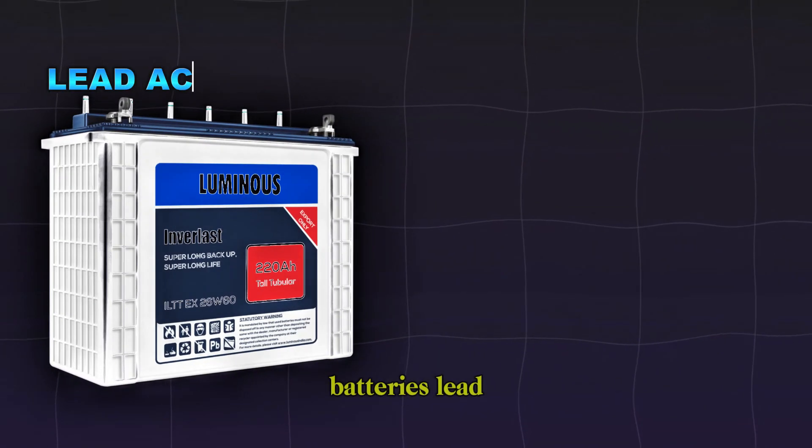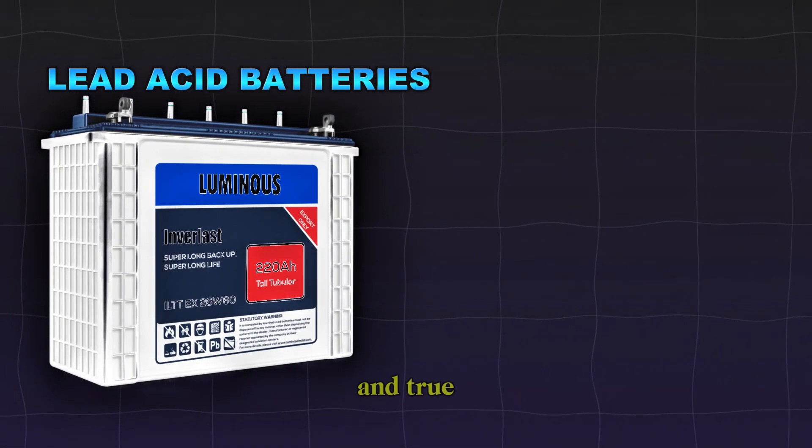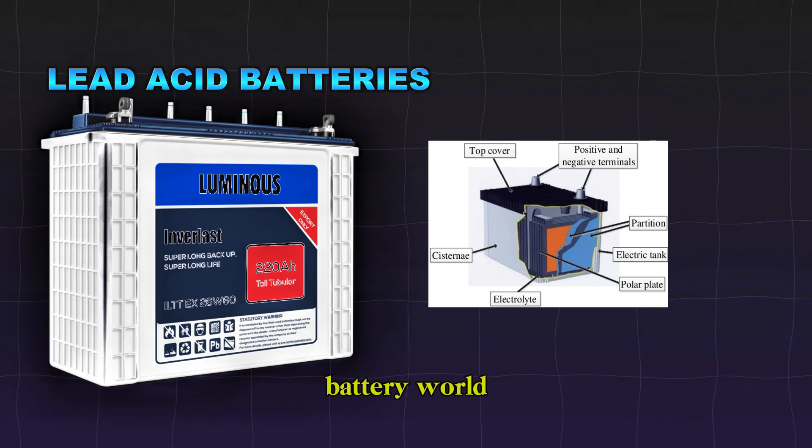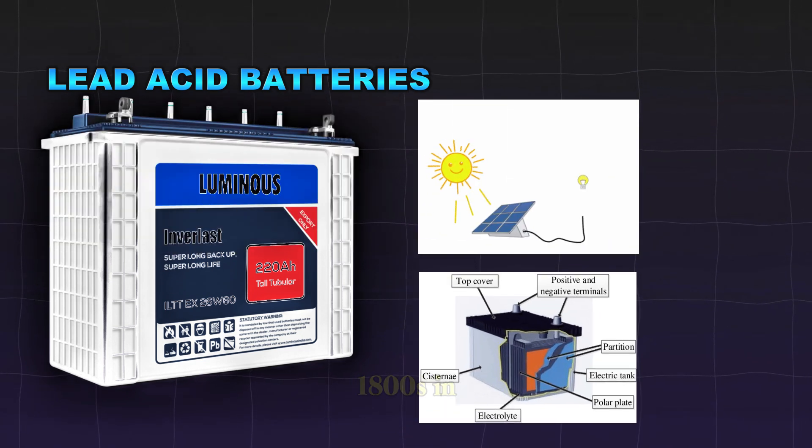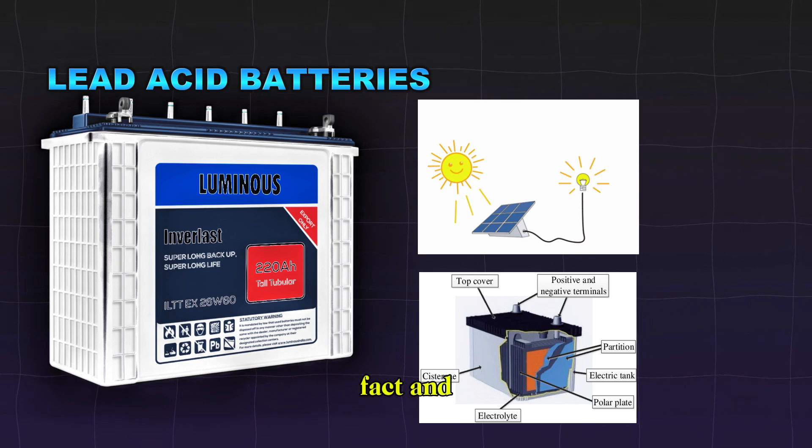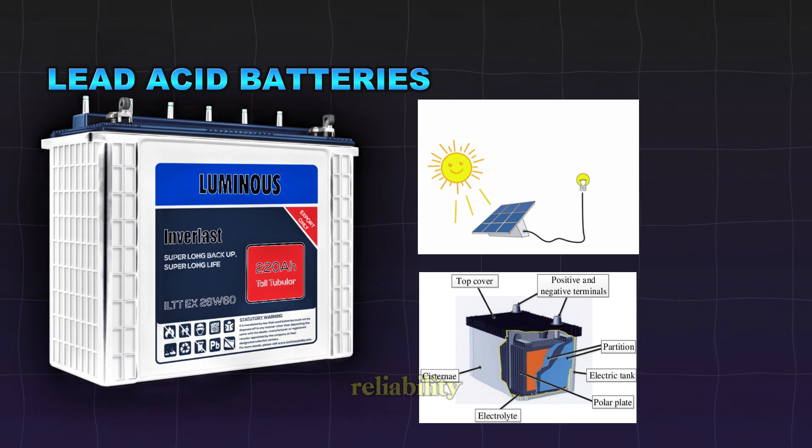One, lead-acid batteries. Lead-acid batteries are the tried and true technology of the solar battery world. These deep-cycle batteries have been used to store energy for a long time, since the 1800s in fact, and they've been able to stick around because of their reliability.